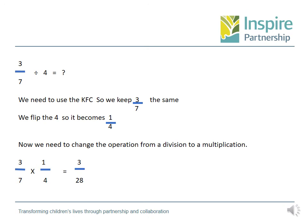We'll do this again to help us with a different question. This one is 3 sevenths divided by 4, and we need to find out the answer. So we use the KFC — we keep 3 sevenths the same, we flip 4 so it becomes 1 fourth, or a quarter. Now we change the operation from a division to a multiplication. So we've got 3 sevenths multiplied by 1 quarter. 3 multiplied by 1 is 3, and 7 multiplied by 4 is 28. So the answer to 3 sevenths divided by 4 is 3 twenty-eighths.